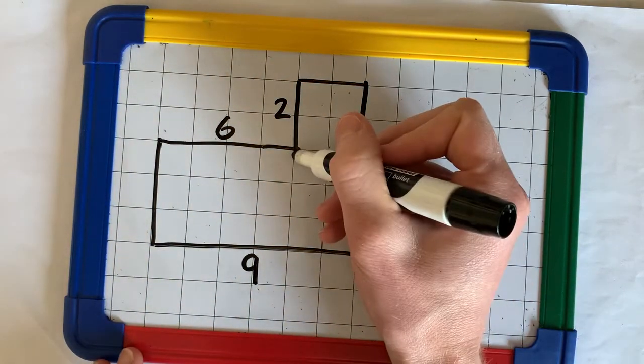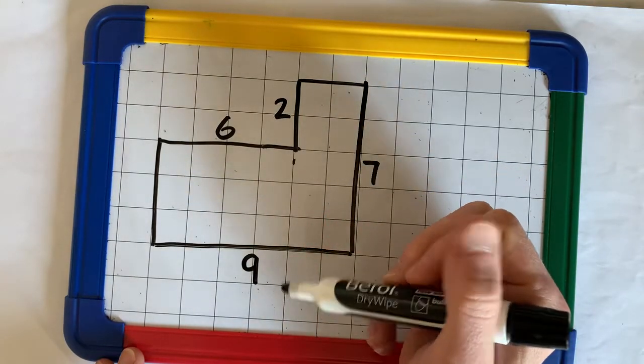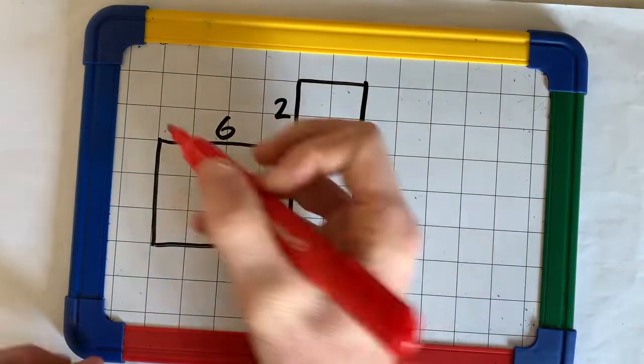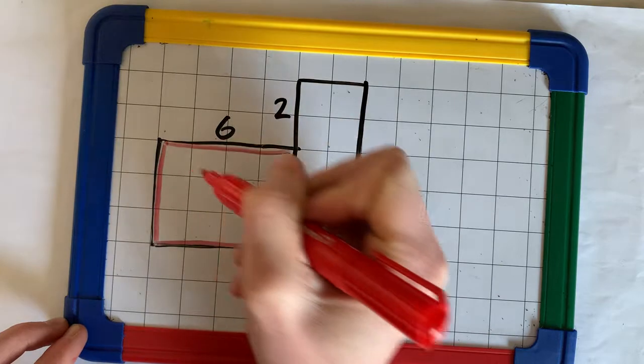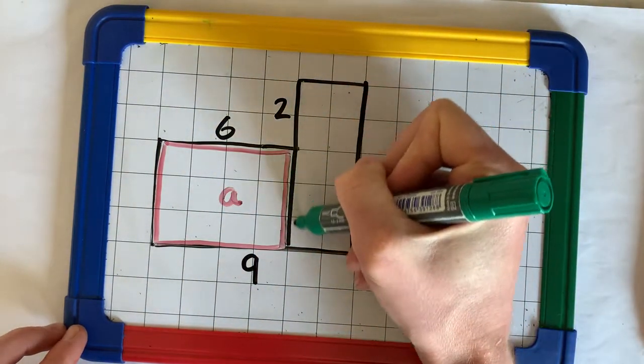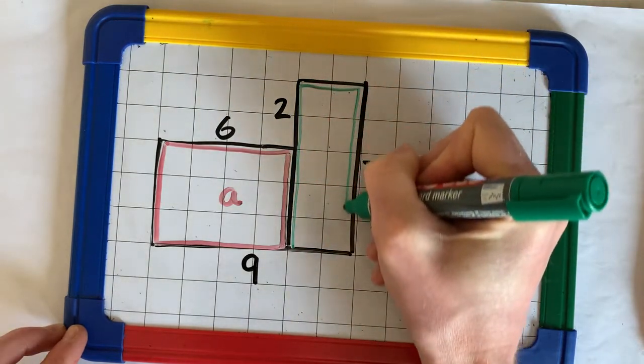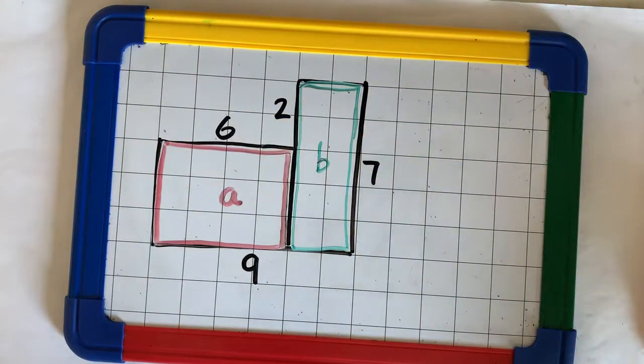So, we've got our compound shape. We can either split it down here, or we could split it along here. I'm going to say I'm going to split it down here to create two rectangles. Rectangle A, a red rectangle. And rectangle B, a green rectangle. So, we want to find the area of both these shapes.